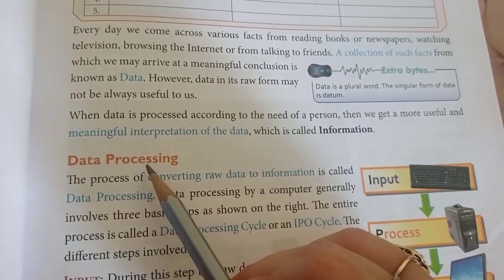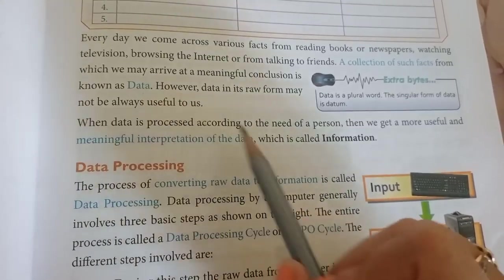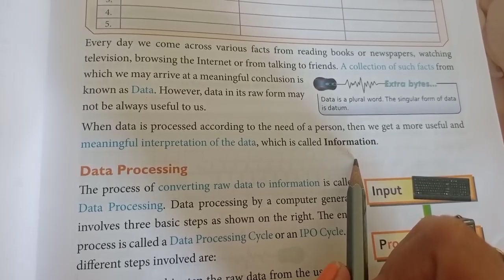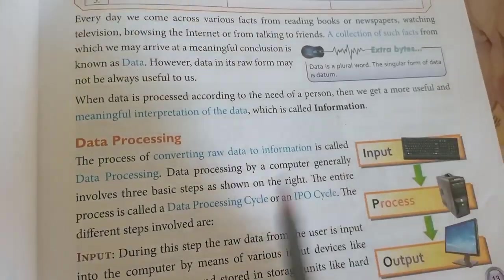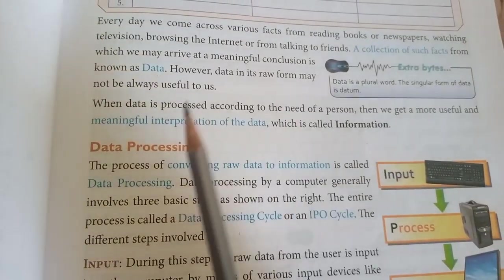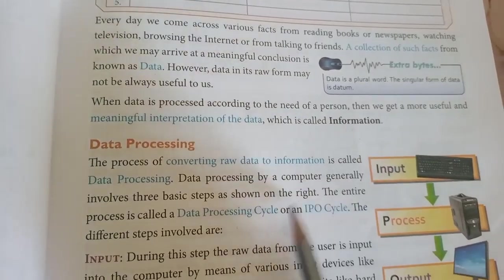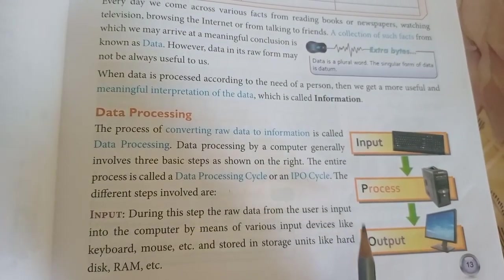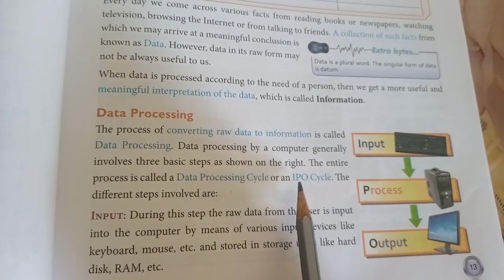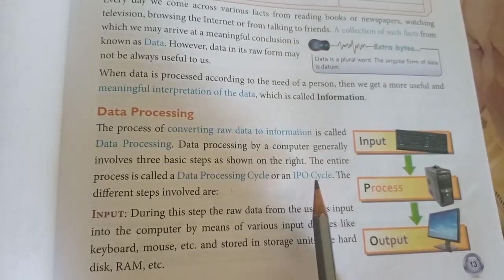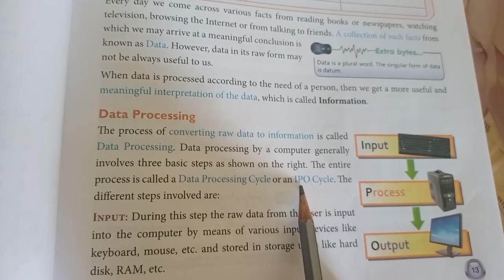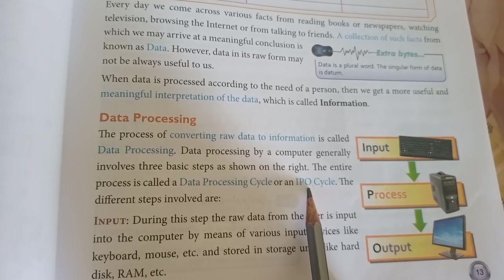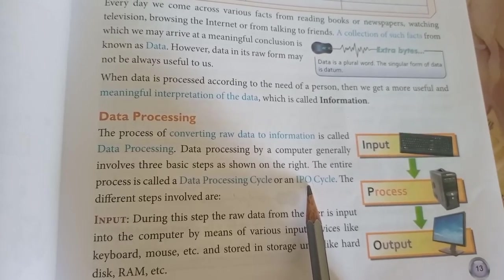Now let us start with data processing. What is data processing? The process by which data is converted to information is known as data processing. In a computer, the data processing cycle is done by the IPO cycle, which stands for Input, Processing, and Output. Every time the computer works, it works on this cycle — first it takes input from the user, then it does the required processing, and then it displays the result, which is known as the output, or information.